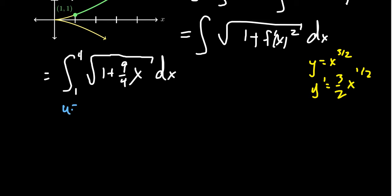And we're going to do a u substitution. Since we have a linear function inside of the square root, that'll be our u, the linear function, 1 plus 9 fourths x. Taking the derivative, that'll be 9 fourths dx. So we need a 9 fourths right here inside the integral. So we'll times by 4 ninths to correct that.